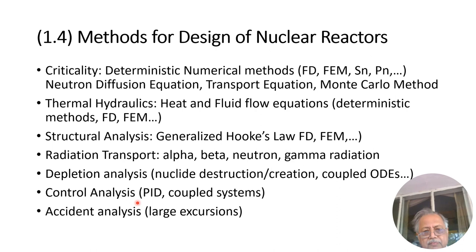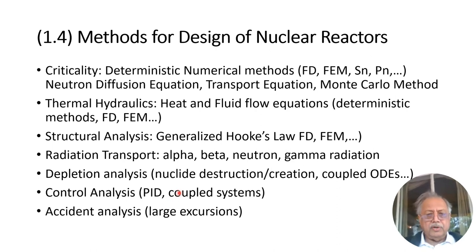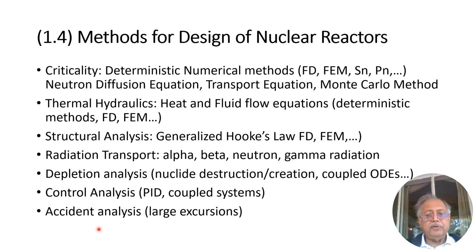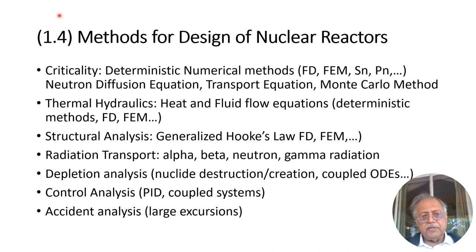Control analysis using proportional-integral-derivative systems or coupled systems is needed to prevent transients from growing out of control. These days AI and adaptive methods are also being developed for this. Finally, accident analysis addresses what happens when systems fail — for example, a pump failure stops coolant flow, heat continues to be produced, and the core can melt down. Notable accidents include Windscale, Three Mile Island, Chernobyl in 1986 — where the containment was blown many meters into the sky releasing radiation — and Fukushima. All these coupled analyses together constitute the design of nuclear reactors.